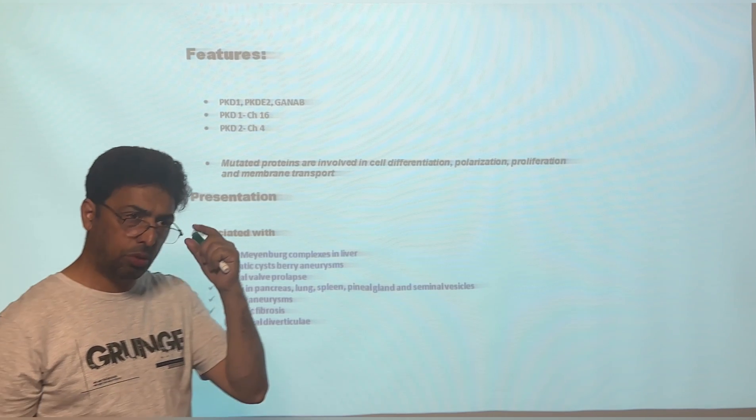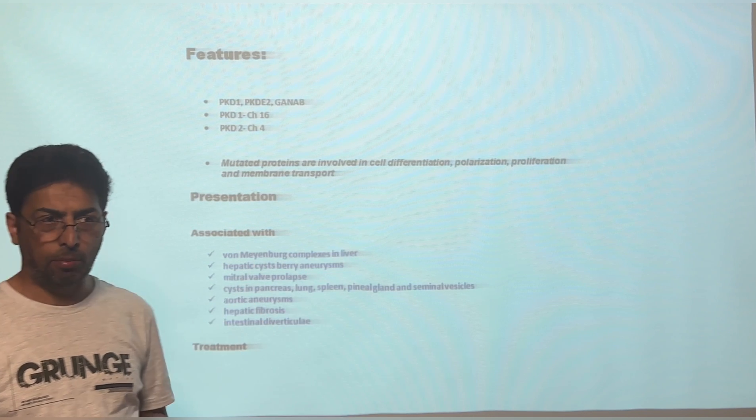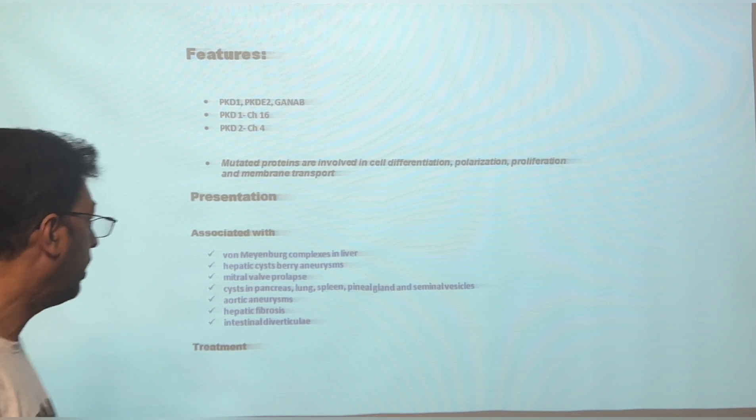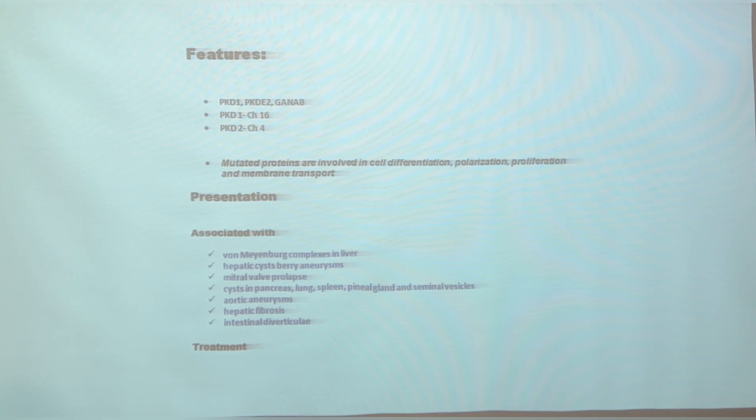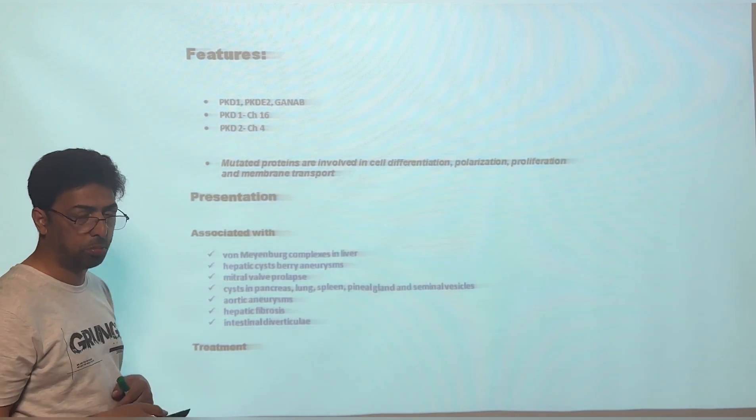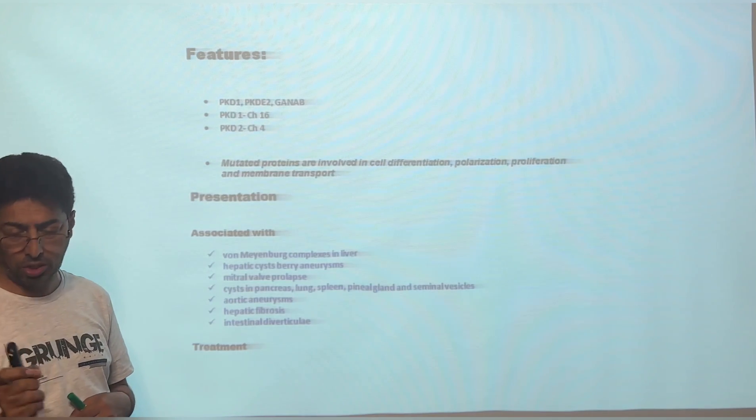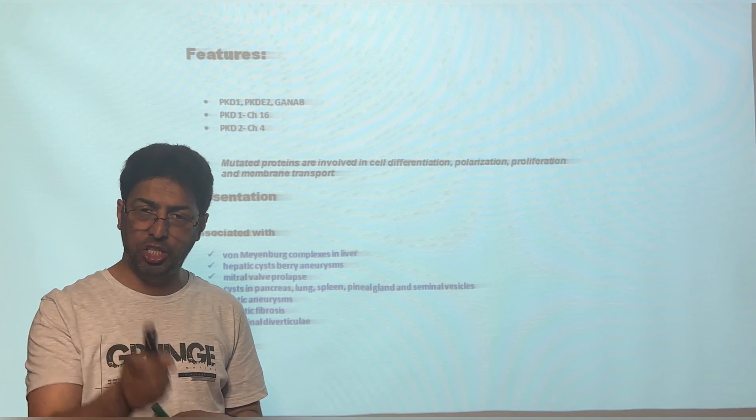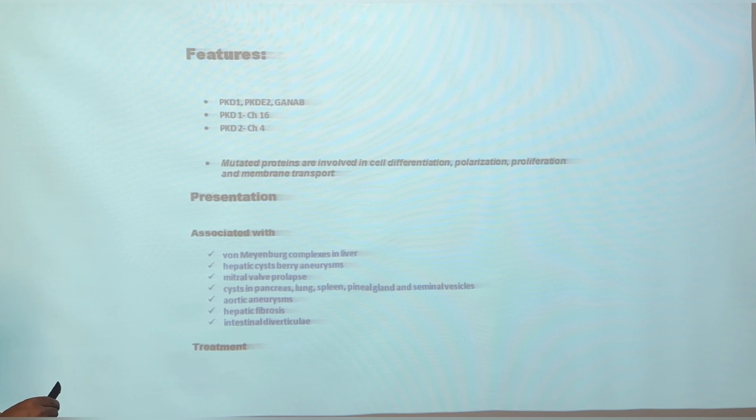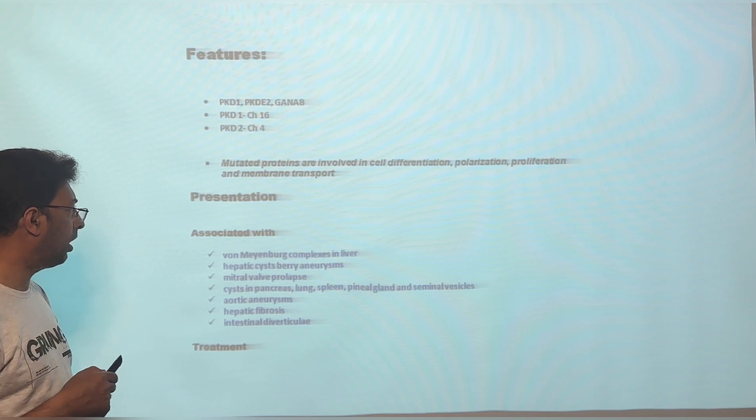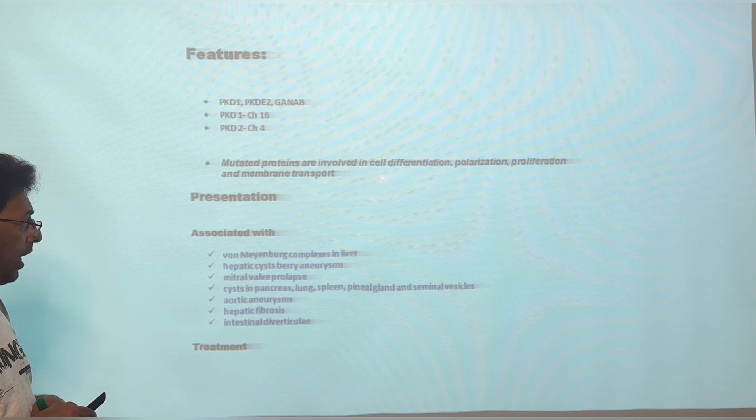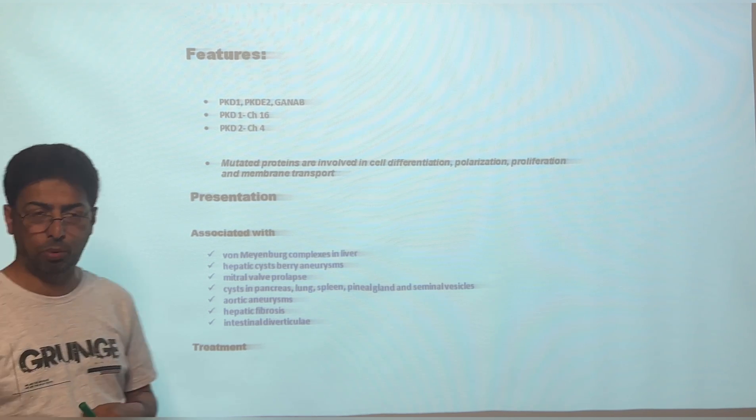So these are some of the factors over here. PKD1 gene, PKD2, and GANAP is another gene. As I mentioned, PKD1 gene is on chromosome 16, a question quite frequently asked, which chromosome and which gene. So this is chromosome 16 and chromosome 4. As I mentioned, these mutated proteins are involved in abnormal cell differentiated polarization, proliferation, and membrane transport.